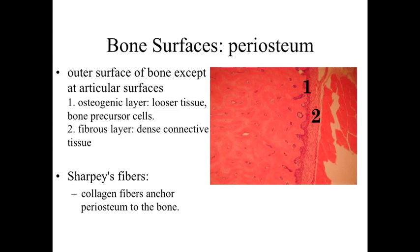The periosteum is essentially a connective tissue region involved primarily with allowing the bone to become connected to the surrounding tissues. We don't want a skeleton that's loose with the outer skin and other structures moving freely around it — we need it to be anchored. Similar to the perichondrium, the region around cartilage, the periosteum has two distinct layers.